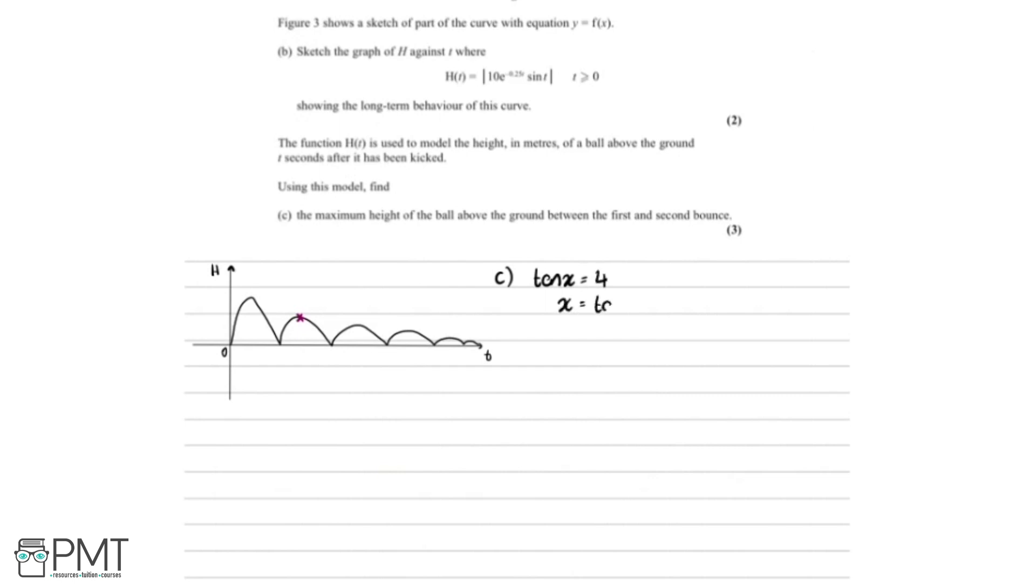So we can say that tan x equals 4. x equals the inverse tan of 4. So if I put that into the calculator to work it out in radians, we get 1.326. However, this is just one of the solutions. And we actually don't want to find the first solution. We want to find the second solution. So I've drawn a quick sketch of the tan graph here to illustrate what we're doing.